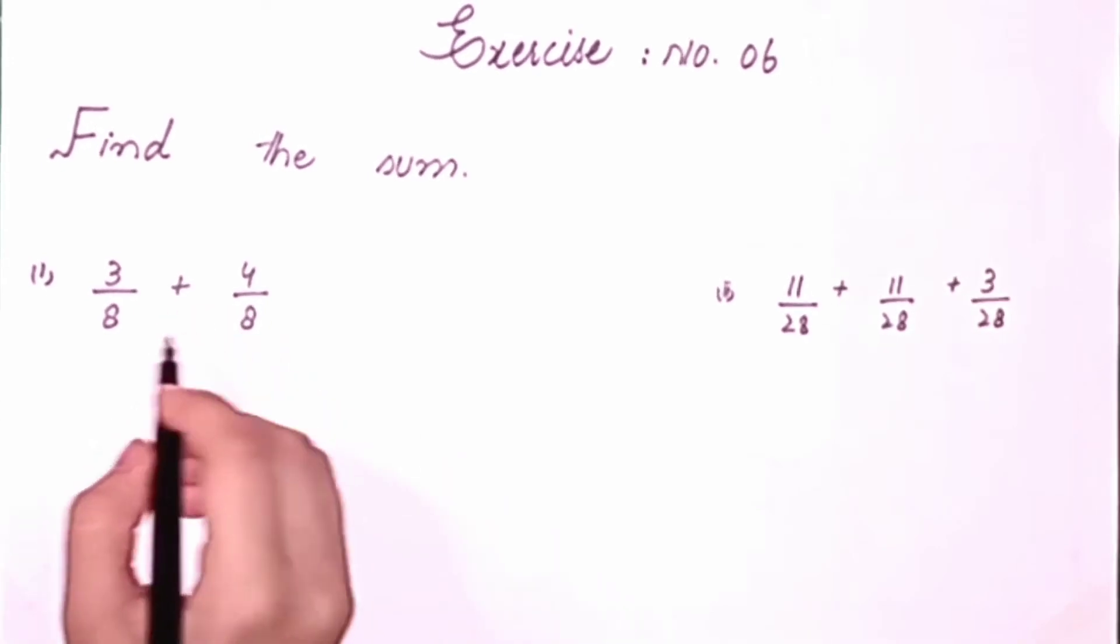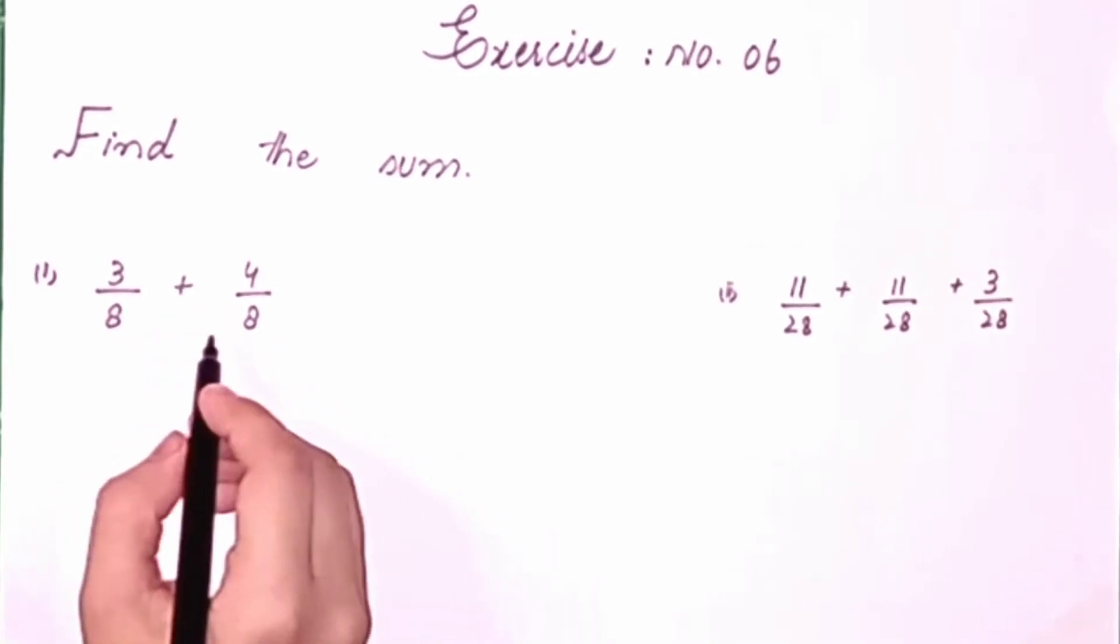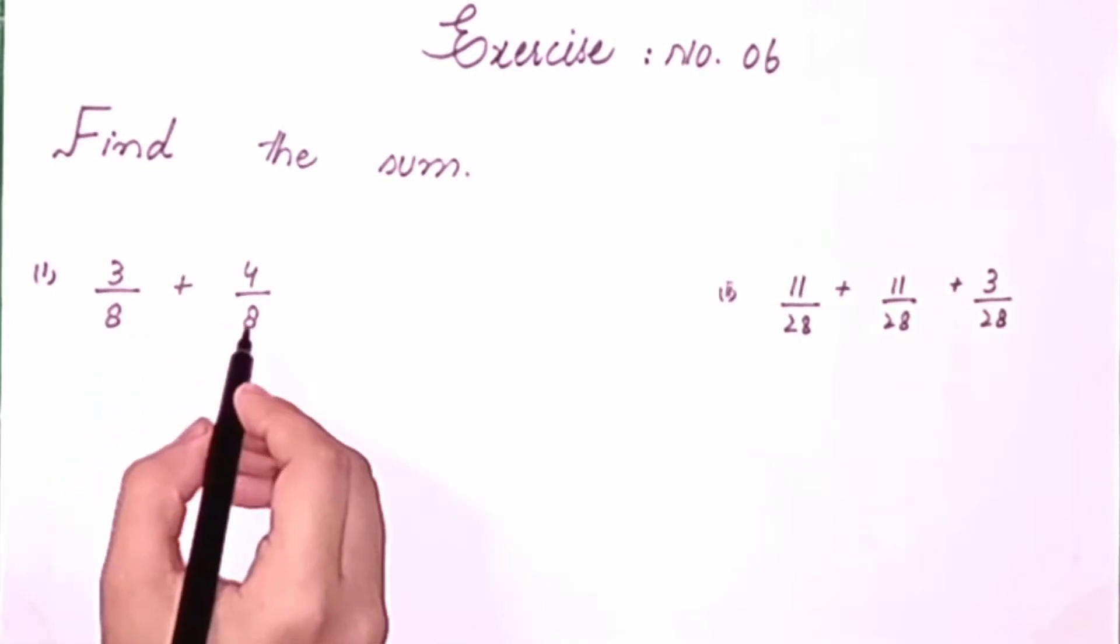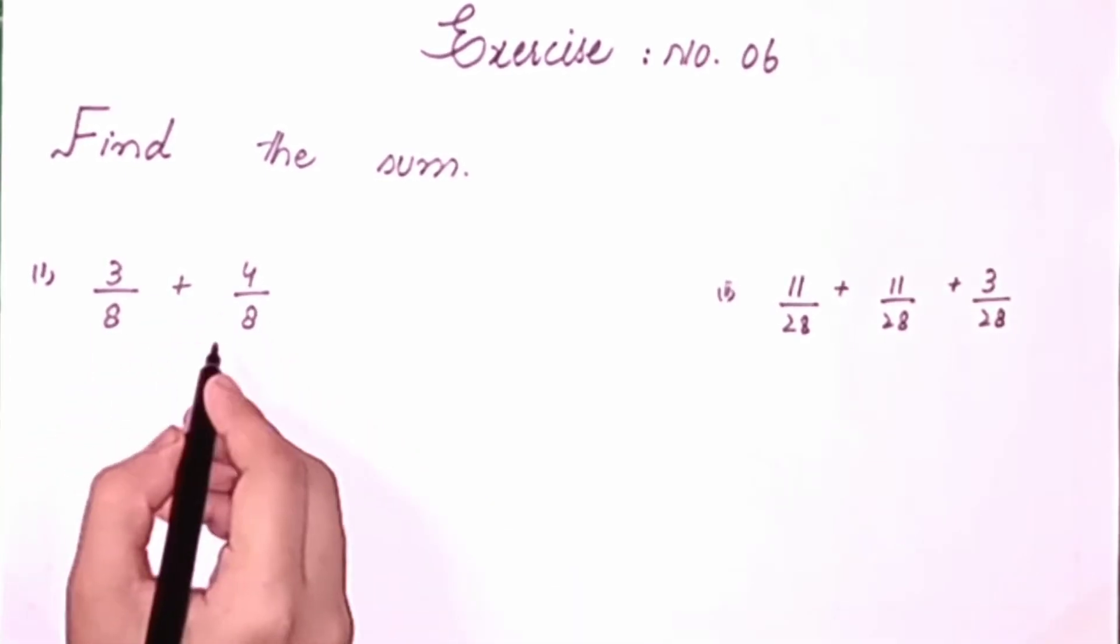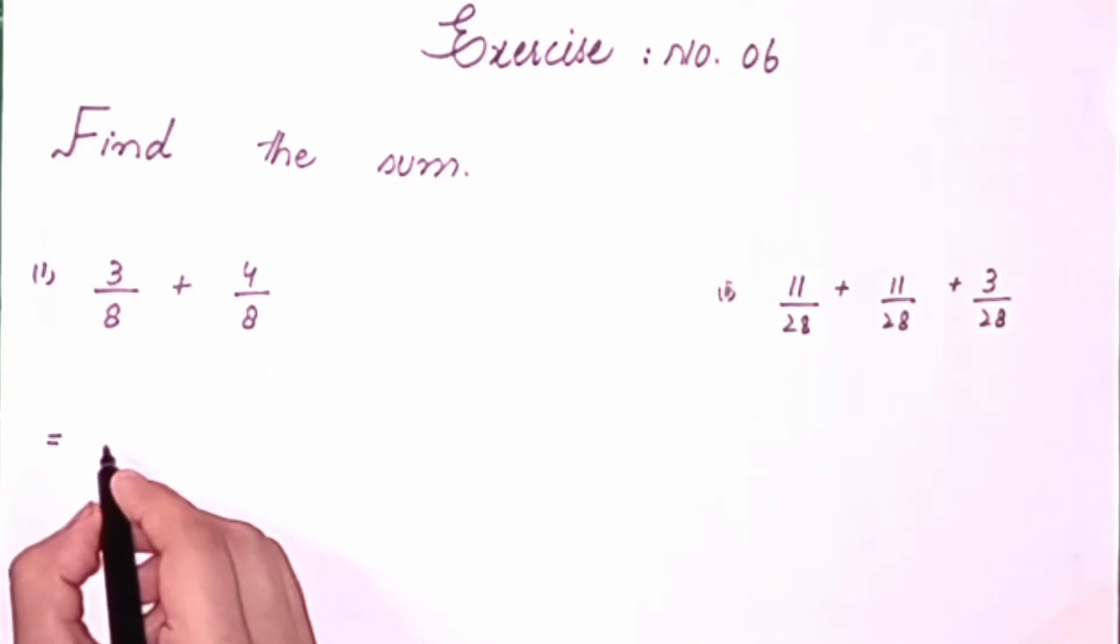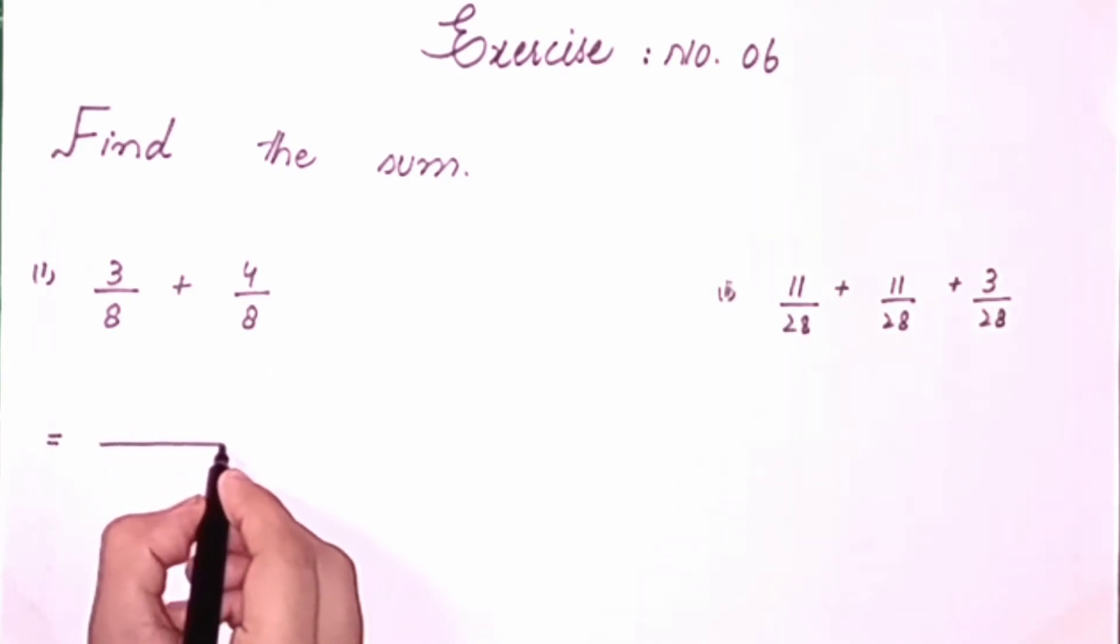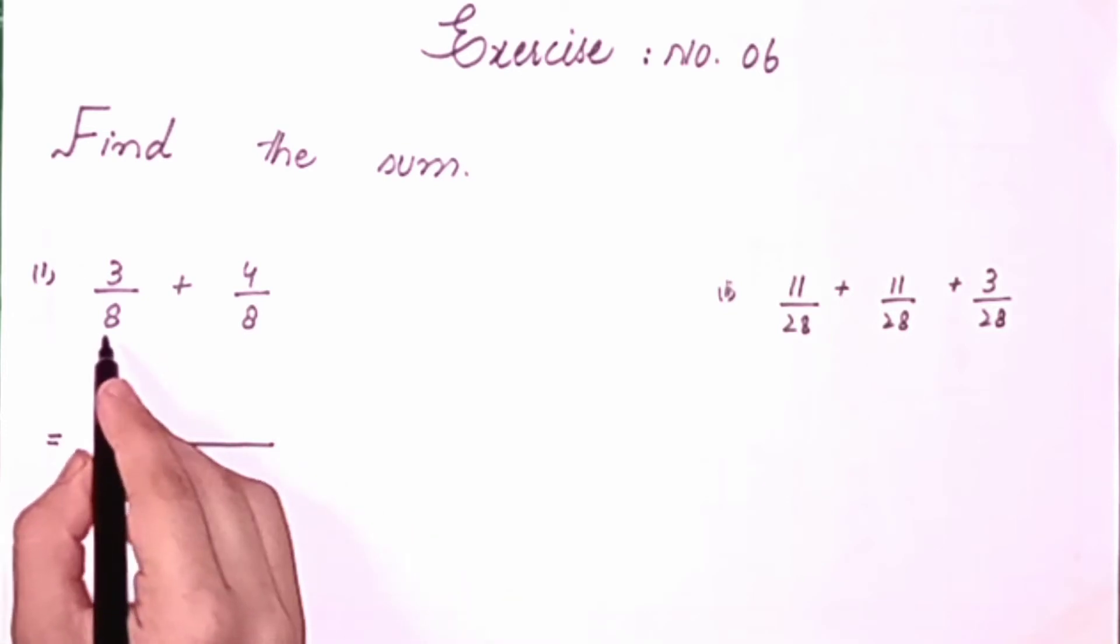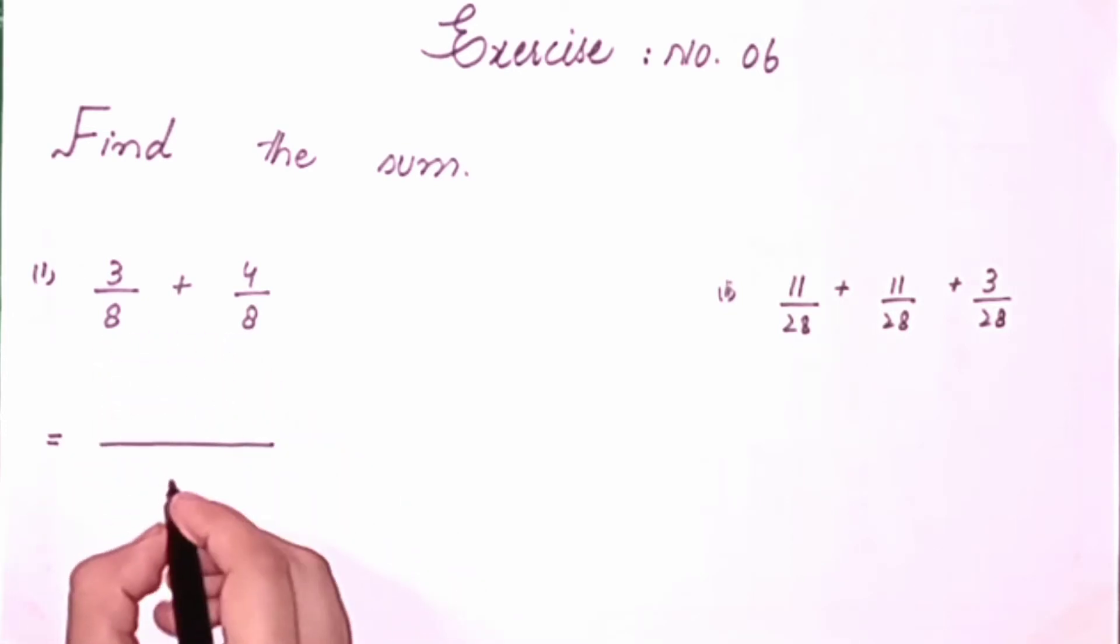3 upon 8 plus 4 upon 8. Students, here you can see the denominator is the same and the numerator changes. If the denominator is the same, we will write it one time. Here, denominator 8, we will write one time.